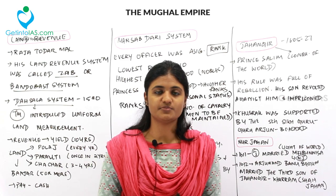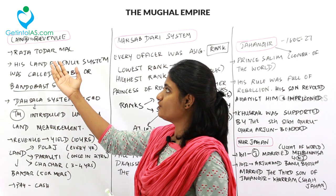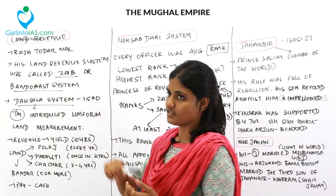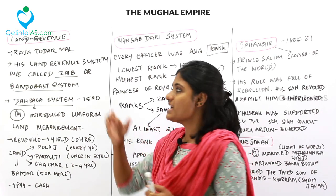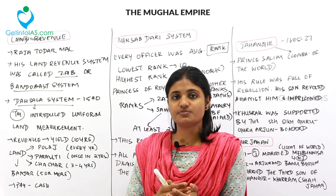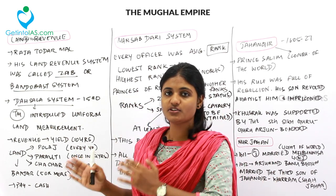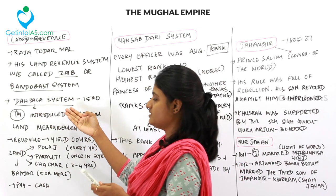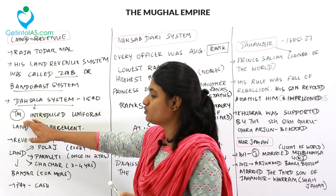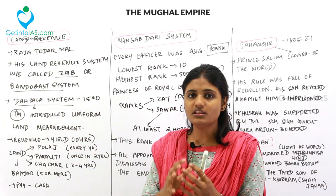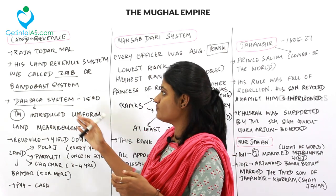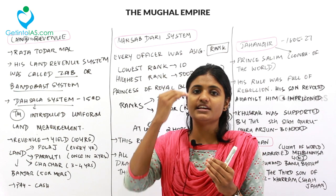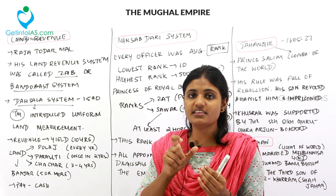Regarding land revenue under Akbar, Raja Todar Mal was the backbone of the system. His land revenue system was called the Zabt or Bandobast system. Raja Todar Mal had earlier served under Sher Shah. The system was upgraded to the Dahsala system in 1580, introducing uniform land measurement. Revenue was calculated based on the average yield of the last 10 years, and farmers paid in cash.